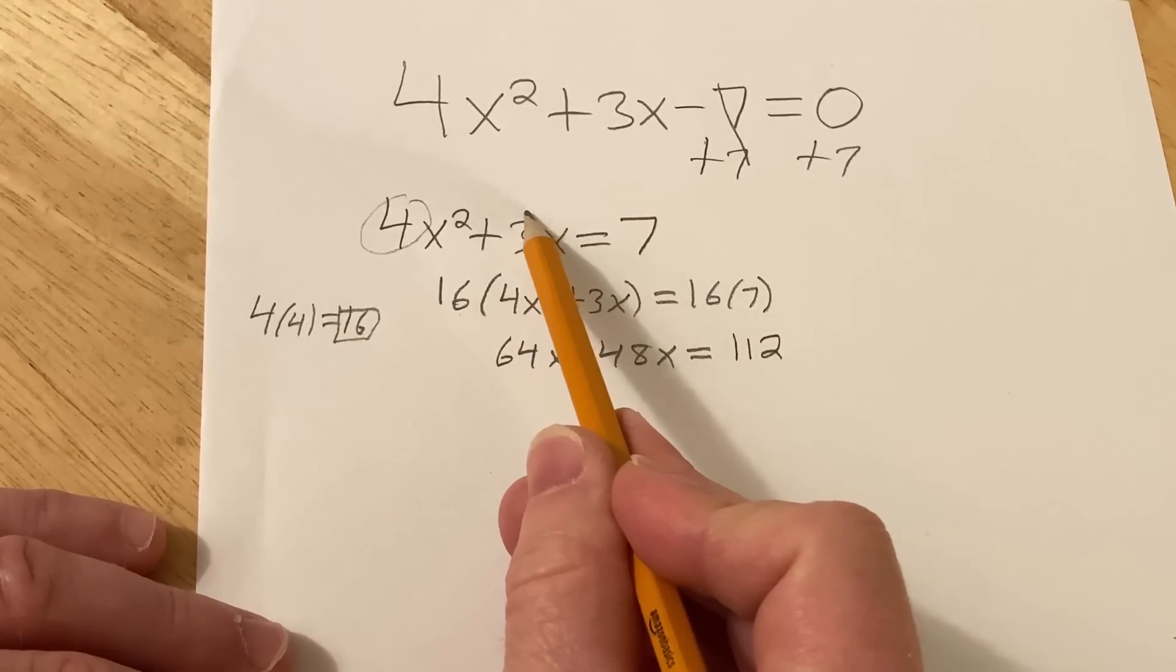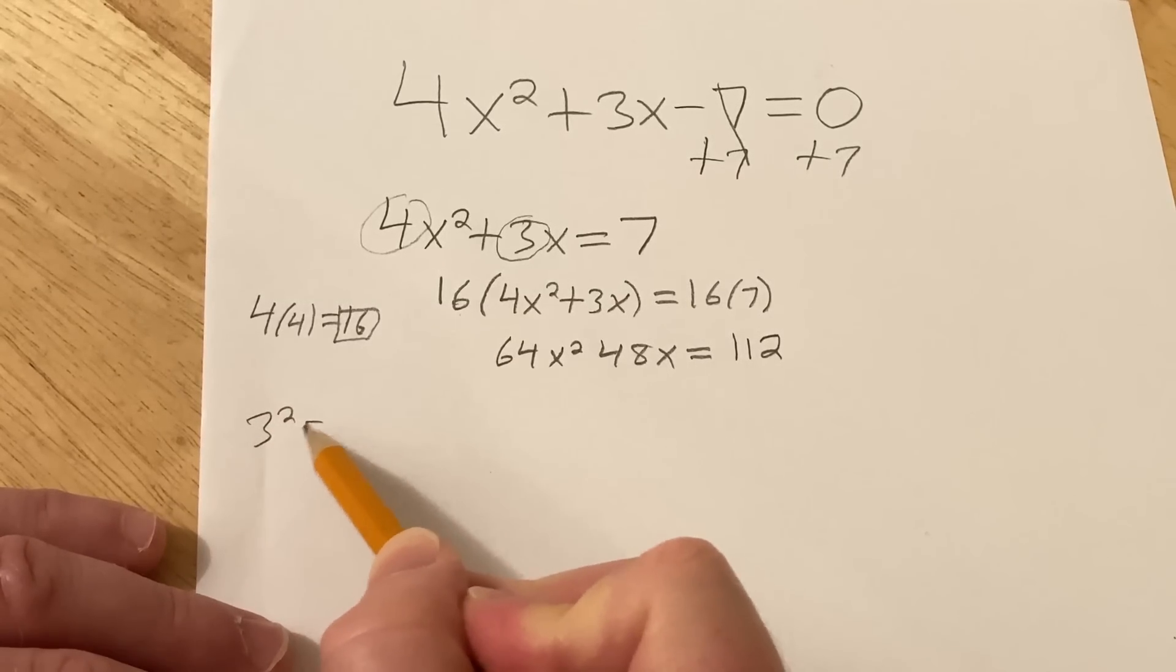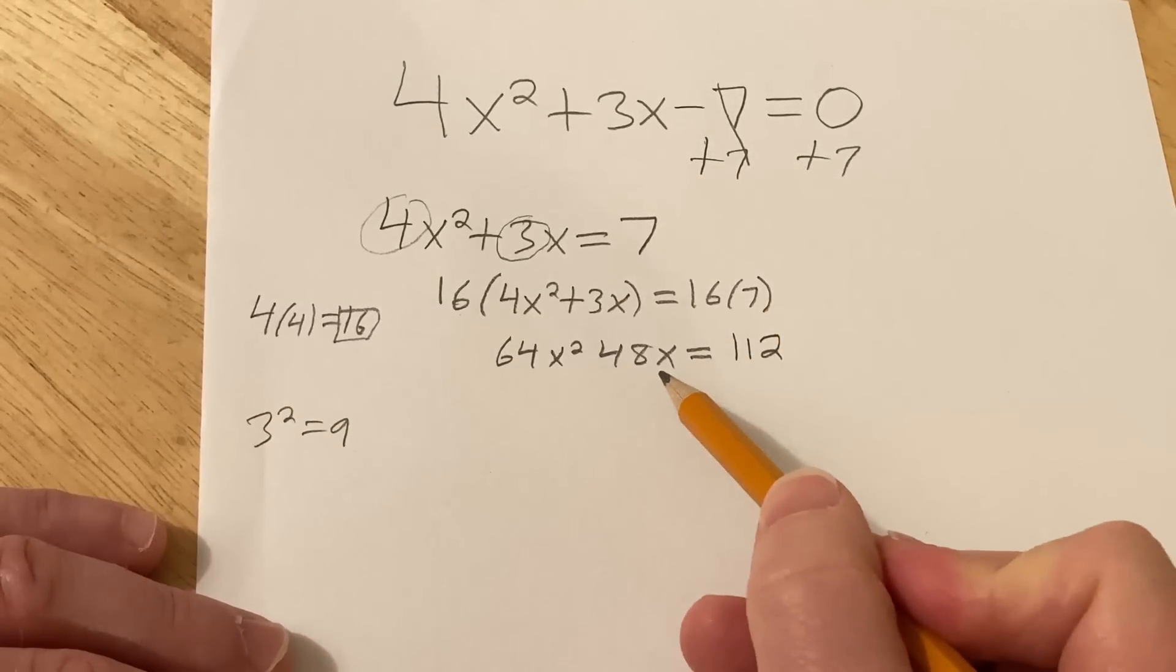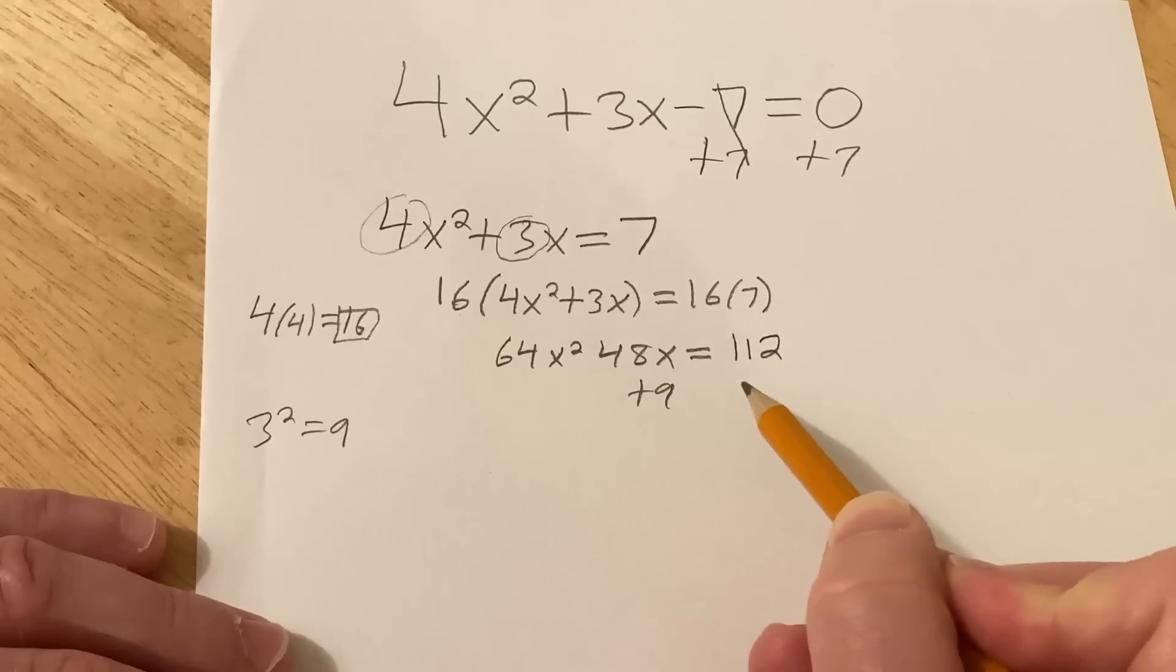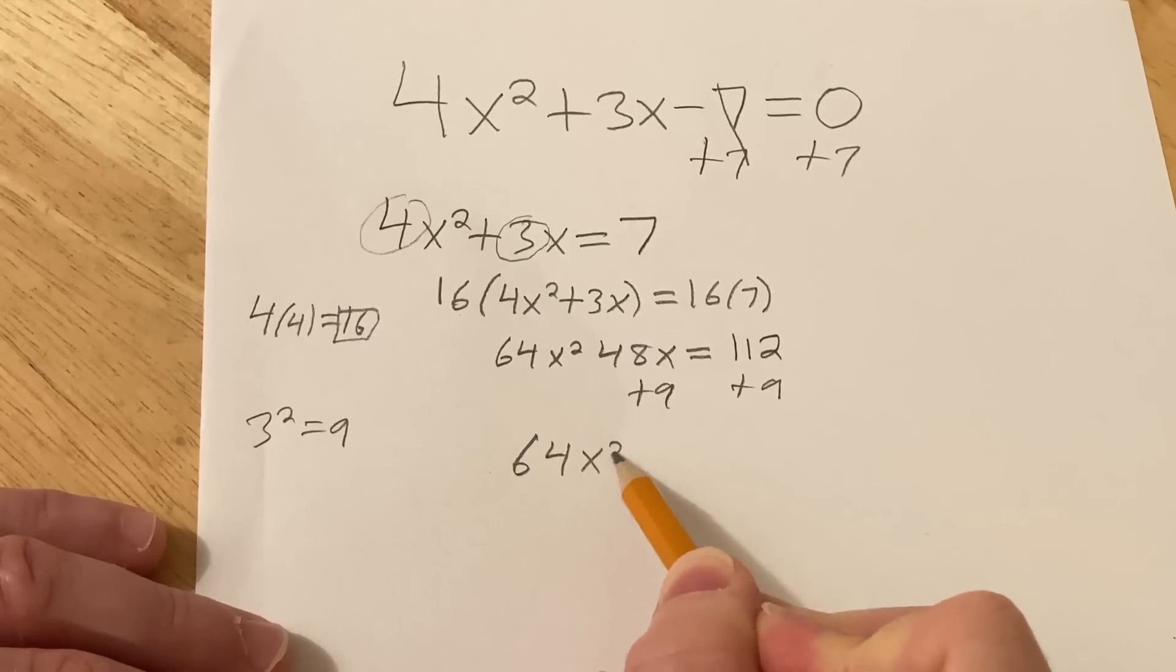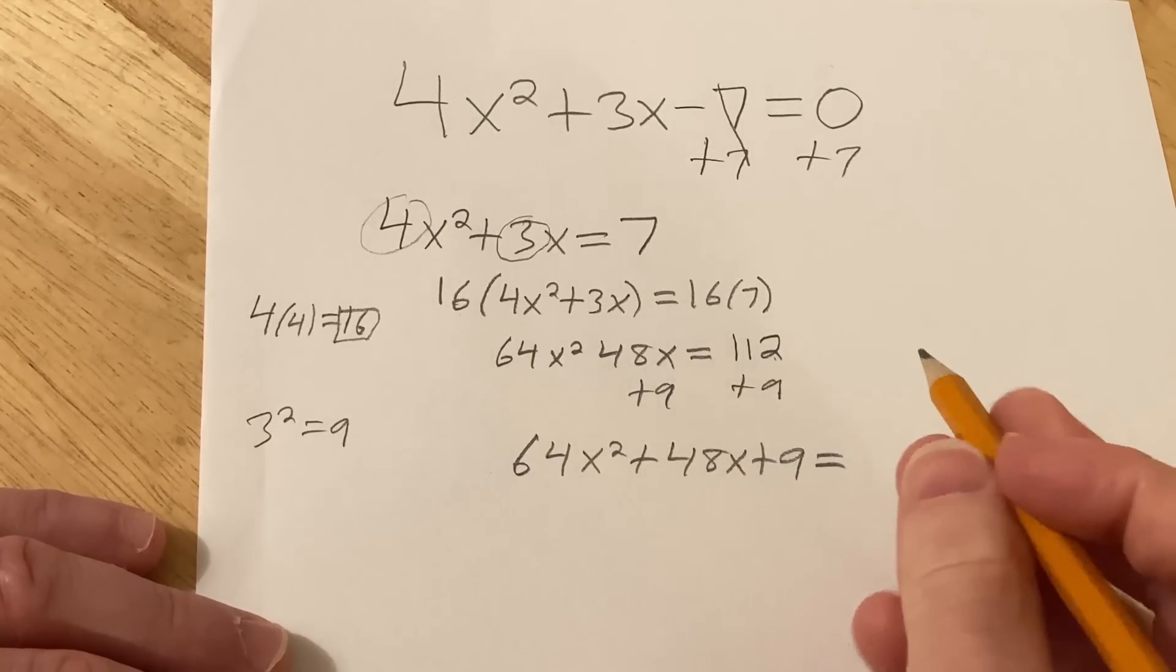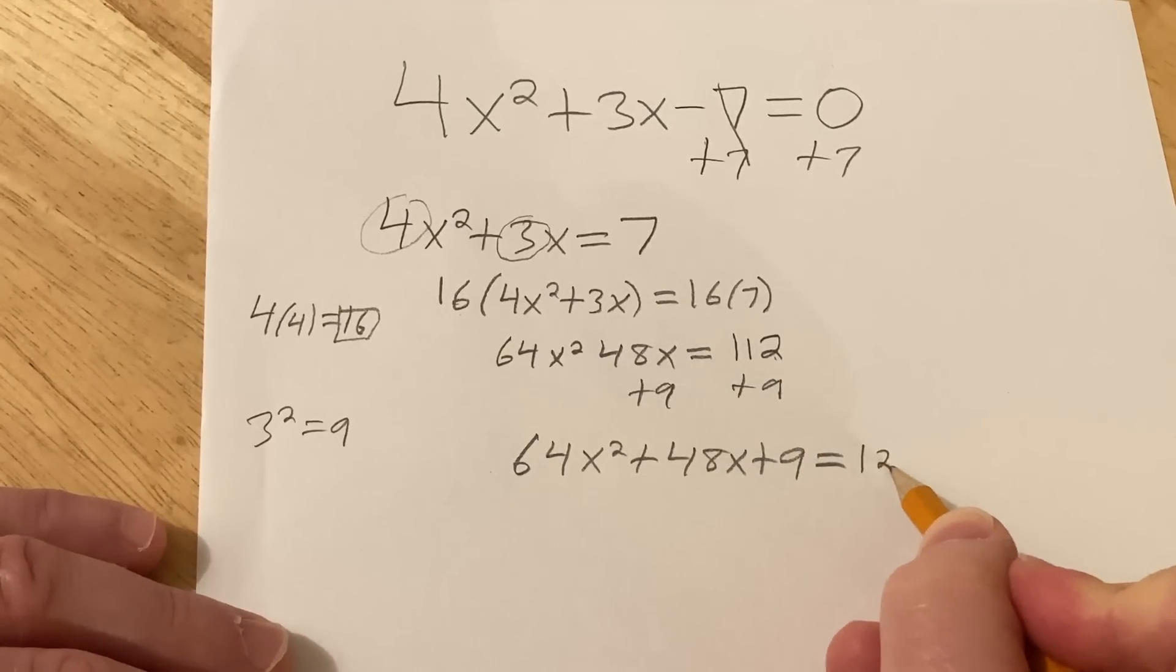The next step is to take this number here and square it and add it to both sides. So 3 squared is equal to 9. So now basically you just add 9 to both sides. So we have 64x squared plus 48x plus 9. And that's equal to 112 plus 9, which is going to be equal to 121.